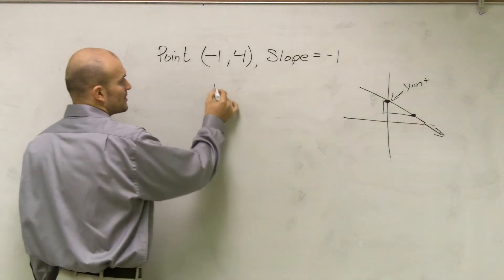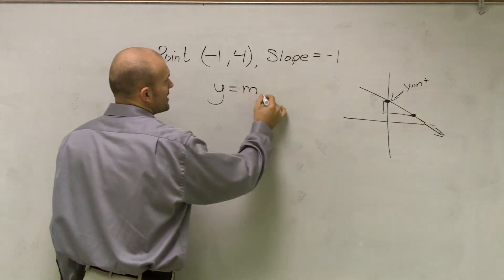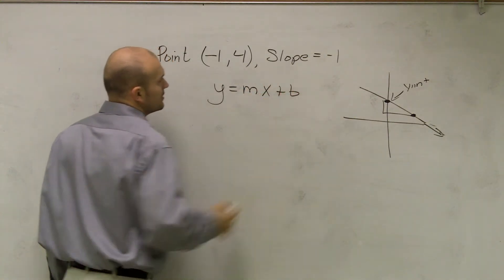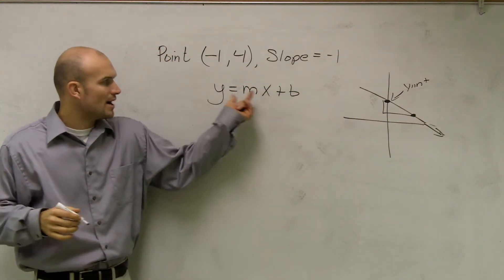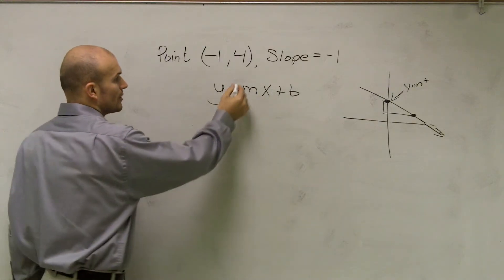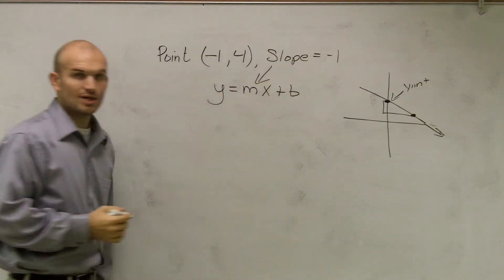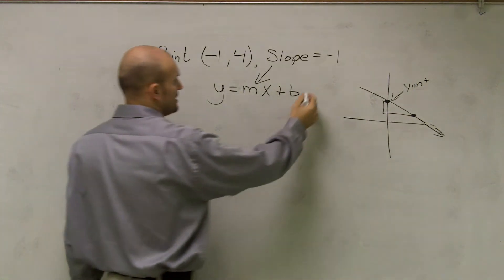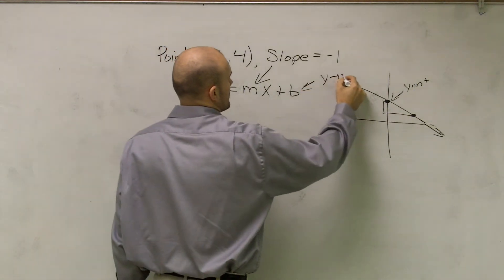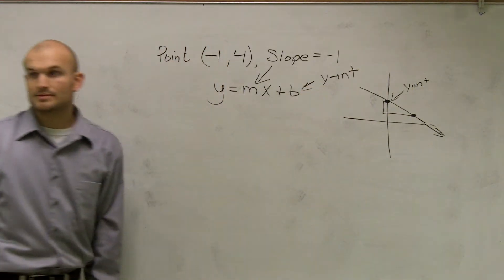However, let's look at a way how to algebraically solve this. So we know that the equation of the line in slope-intercept form is y equals mx plus b, where m is our slope, right? And b is our y-intercept, correct?